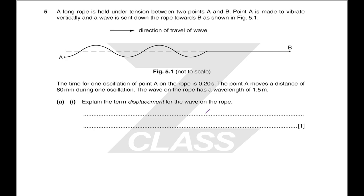A long rope is held under tension between two points A and B, and we have a travelling wave. The time for one oscillation of point A is 0.20 seconds; point A moves a distance of 80 mm during one oscillation. Explain the term displacement for the wave on the rope. Displacement is the distance from the equilibrium position of a certain point — from the dotted equilibrium line. You can have a positive or negative displacement.